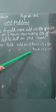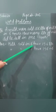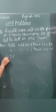156 divided by 6. When we divide this term with this term, 156 divided by 6, we get the milk in 1 hour.